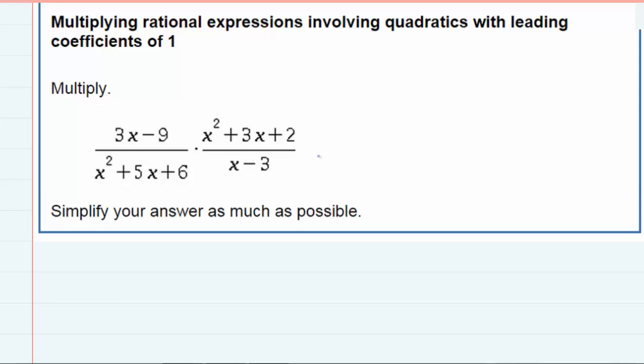So our first step is to rewrite each one of these after being factored. I'm gonna start with this one in the upper left-hand side here, 3x minus 9. If I'm factoring that, both of those two terms have a common 3 that I could factor out.